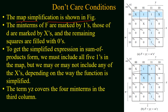The map simplification of the function is shown in the figure. The figure has two parts depending on the selection of min terms and don't care conditions. The min terms of the function are marked by one, the don't care min terms are marked by x, and all remaining squares are filled with zeros. To get the simplified expression in sum-of-products form, we must include all five ones in the map, but we may or may not include any of the don't cares depending on how the function is simplified.